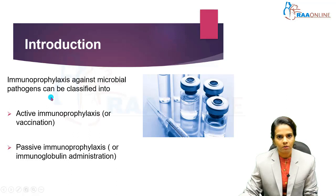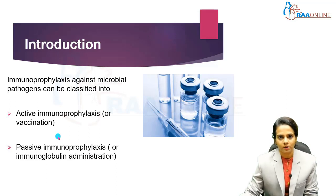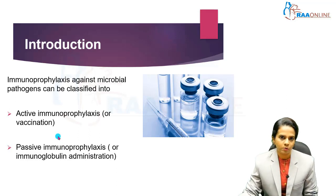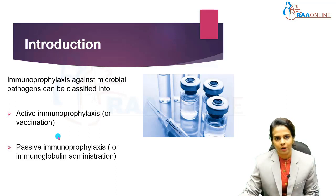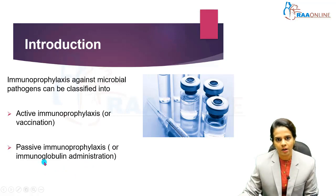Moving on to introduction. Immunoprophylaxis against microbial pathogens can be classified into active immunoprophylaxis or vaccination, and passive immunoprophylaxis or immunoglobulin administration. Active immunoprophylaxis is nothing but vaccination, where there is an active participation of the host immune system. In passive immunoprophylaxis, the ready-made immunoglobulins are administered for immediate effect.